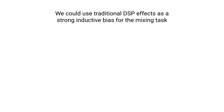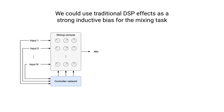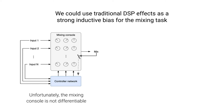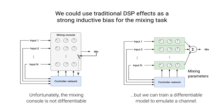As a starting point, we consider that we could use traditional DSP audio effects as a strong inductive bias for this task. That may look like something where we have multiple audio channels going into the mixing console, as well as to a neural network called the controller network. Its job is to analyze the signals and predict the parameters for each channel in the mixing console. The problem, though, is that by default there are some processors in the mixing console for which we cannot easily compute gradients. So what we propose instead is to train a neural network to model a single channel of the mixing console, copy this neural network for as many input channels as there are, and construct a differentiable mixing console proxy.